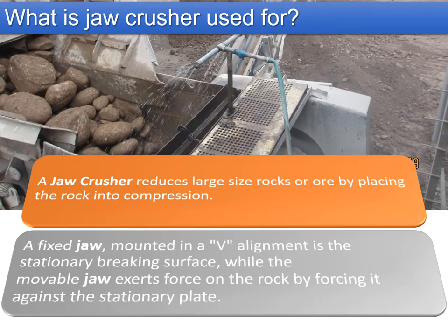Jaw crushers are generally used for breaking large size rocks or ores by placing the rock into compression. The fixed jaw, mounted in a V-alignment, is the stationary breaking surface, while the movable jaw exerts force on the rock by forcing it against the stationary plate, thereby developing pressure that ultimately crushes the boulders into aggregates.